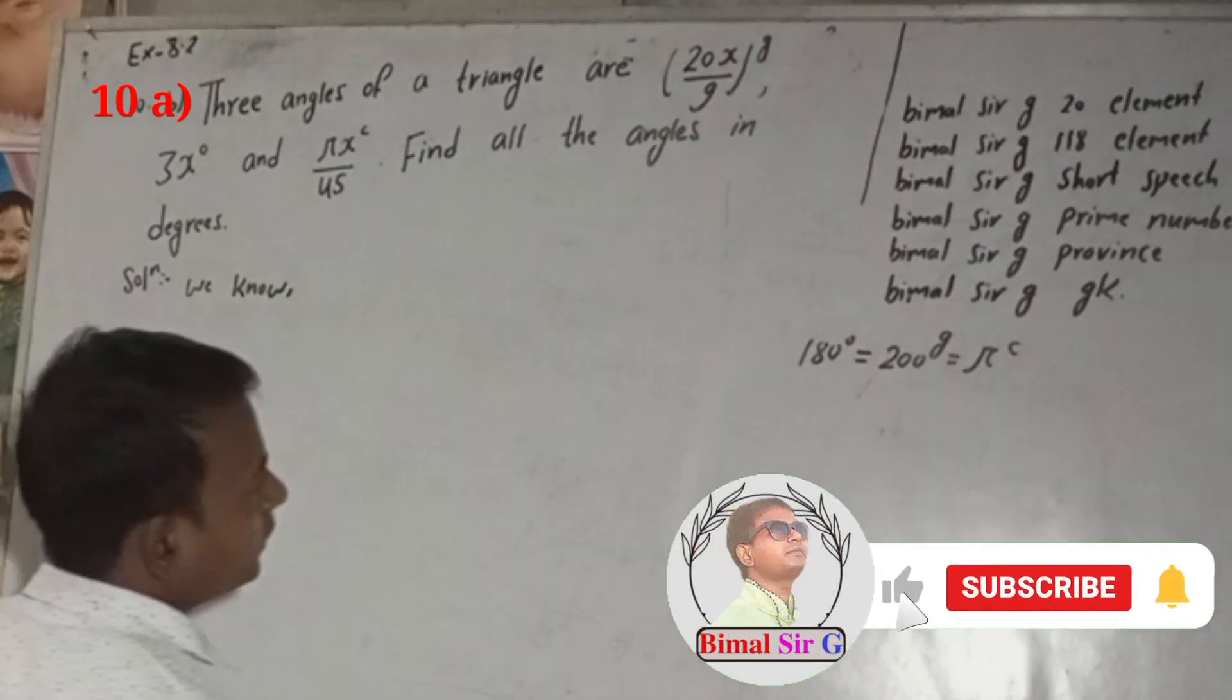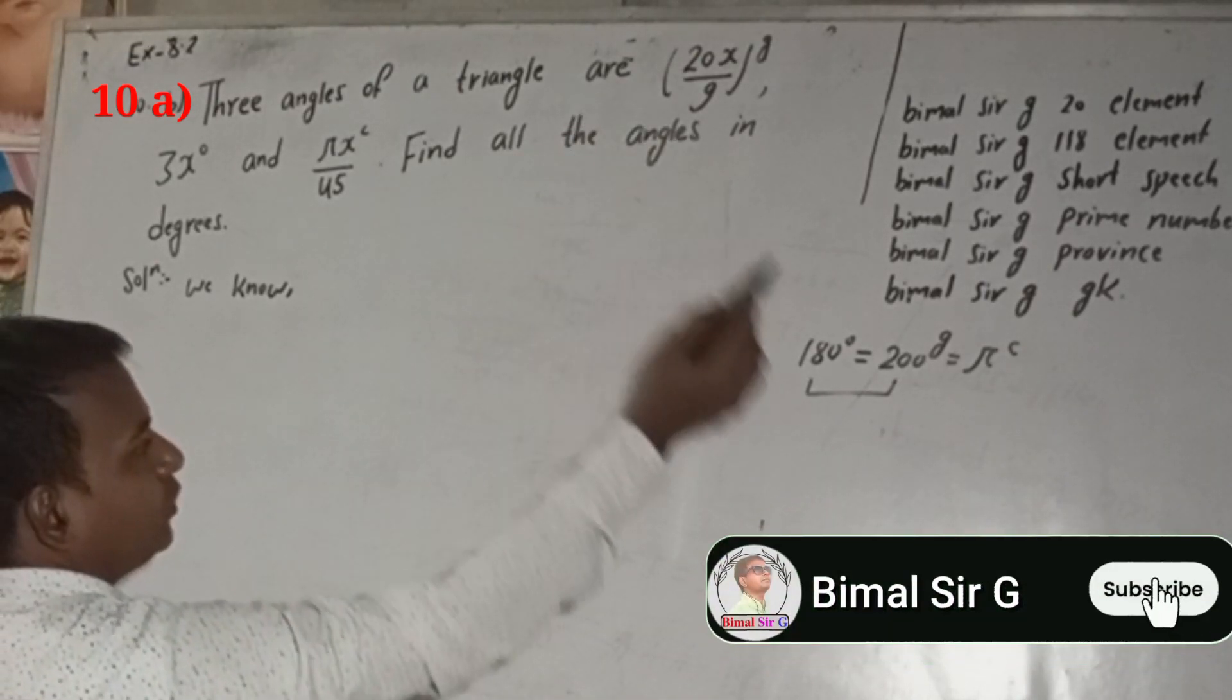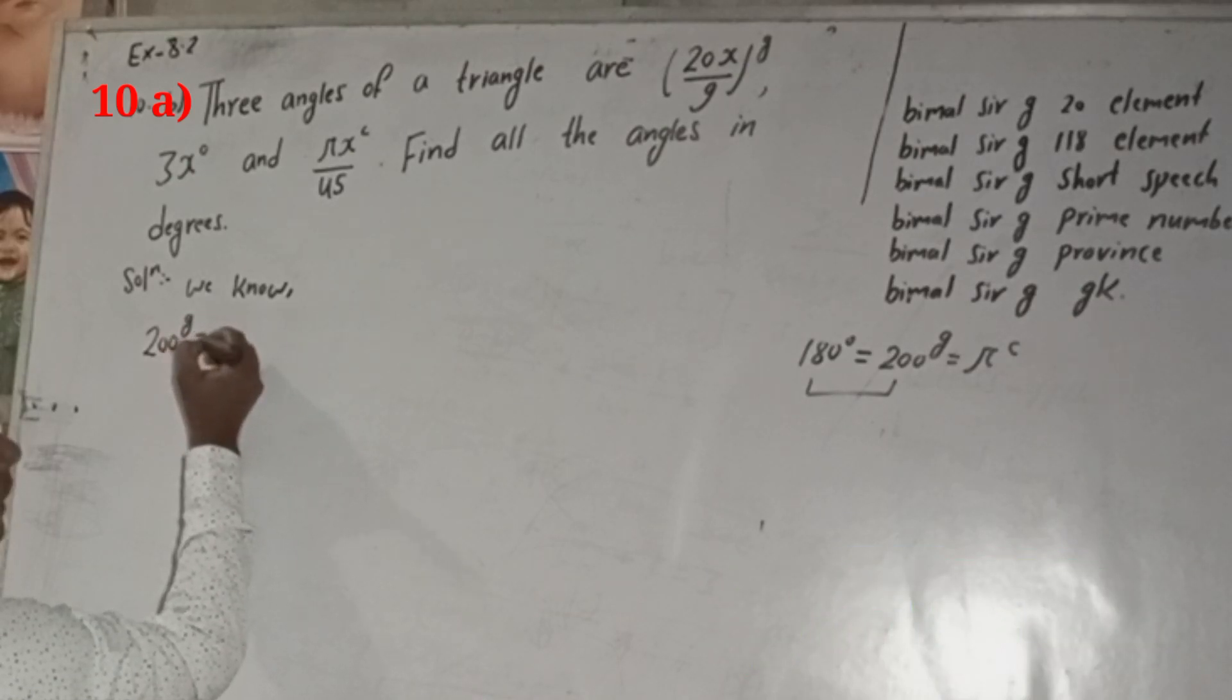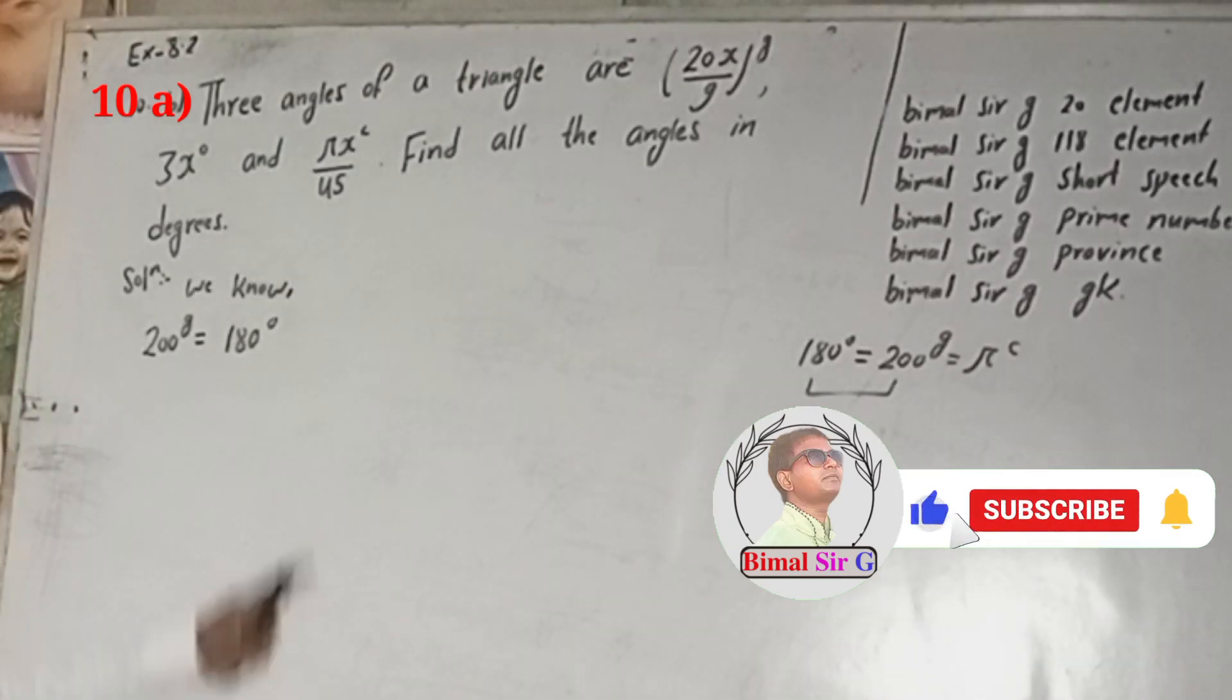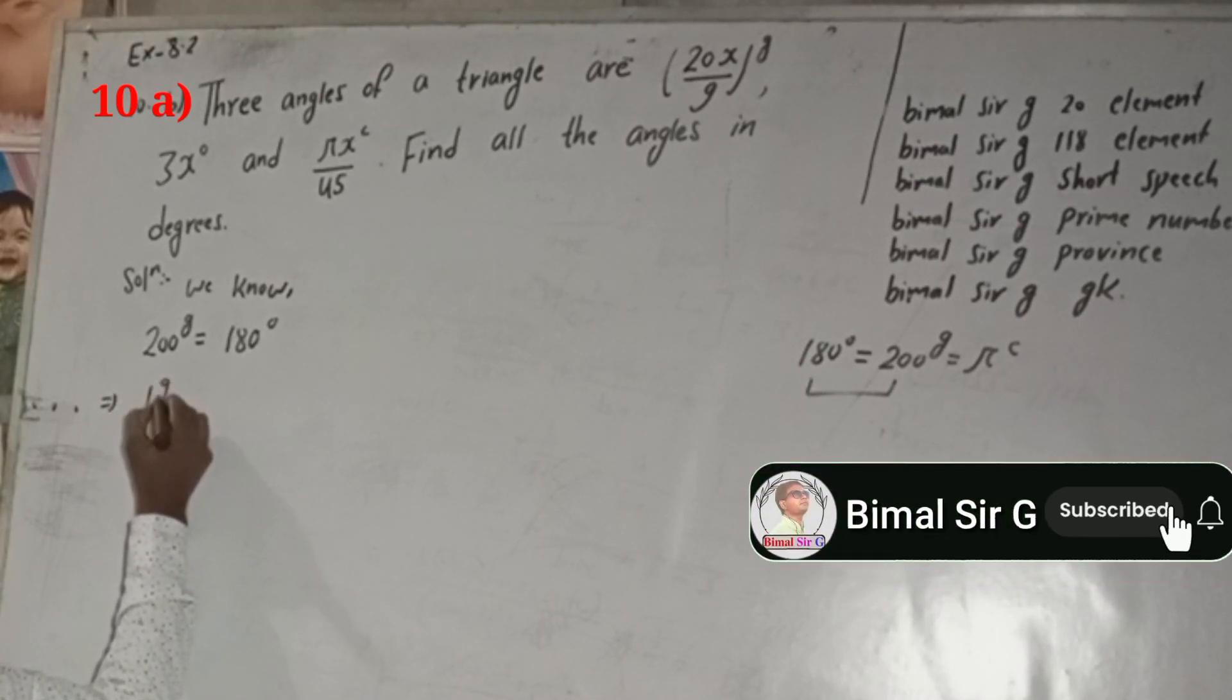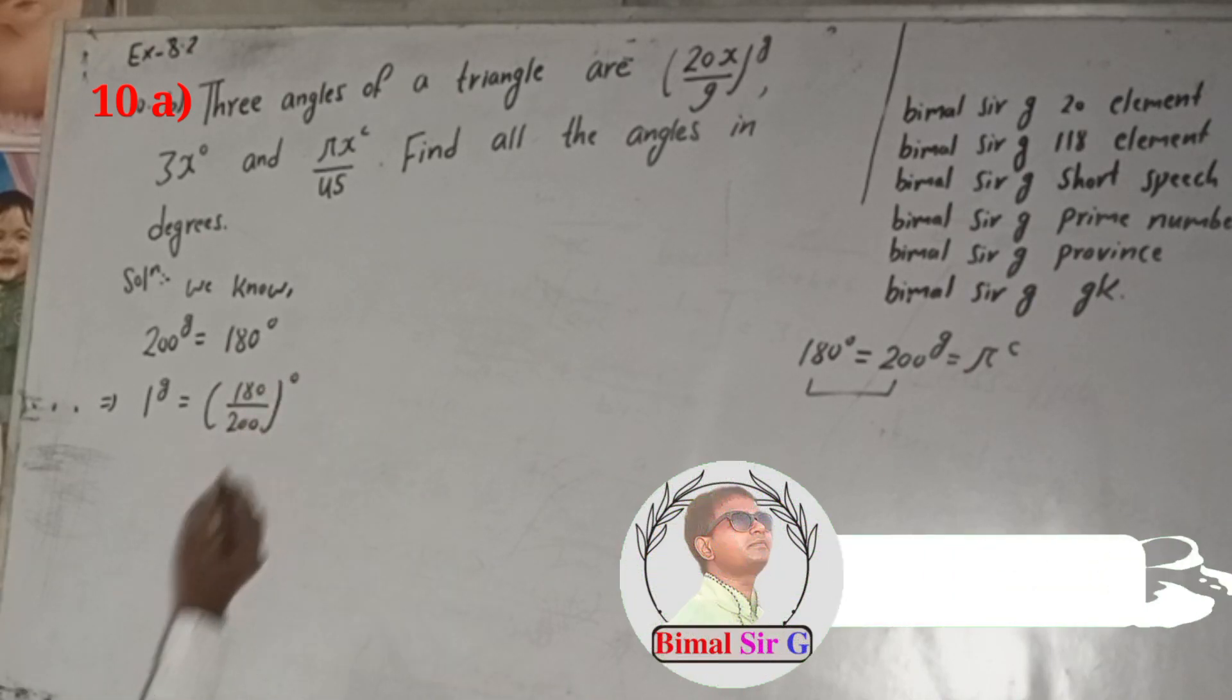So this grade we have to change into degree, so we take this first relation. But since we have to change from grade, we write grade first. So 200 grade is equal to 180 degree. To grade we need degree, so now here, this implies 1 grade is equal to 180 by 200 degree.